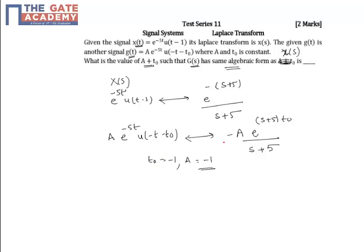-1. If I substitute a = -1 and t_0 = -1, these two will become the same. The problem is asking for the value of a plus t_0, which is -1 minus 1, equal to -2.